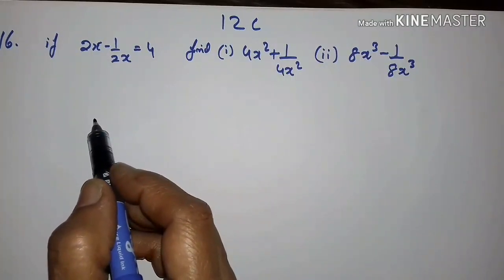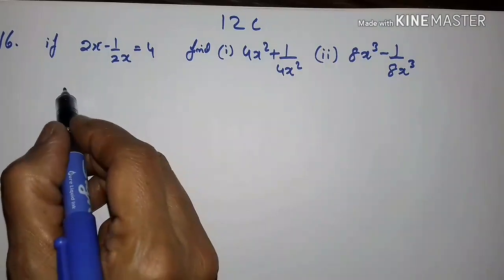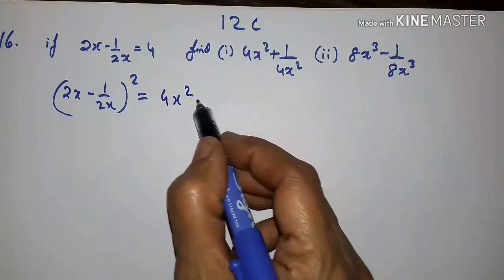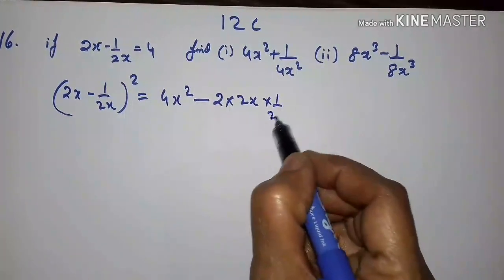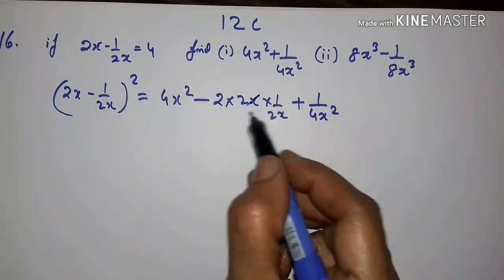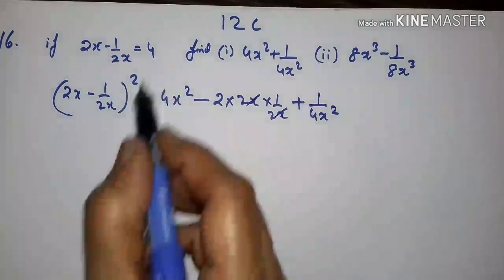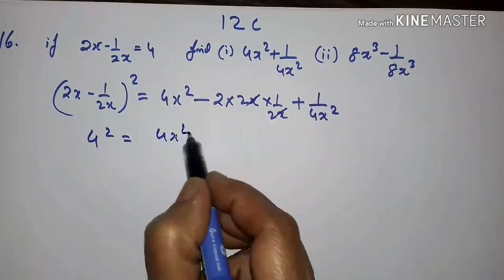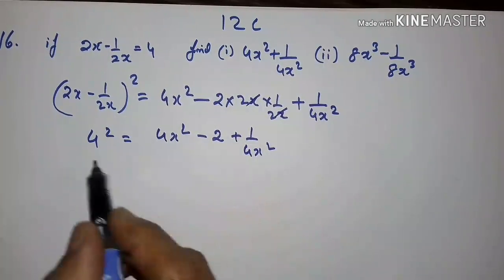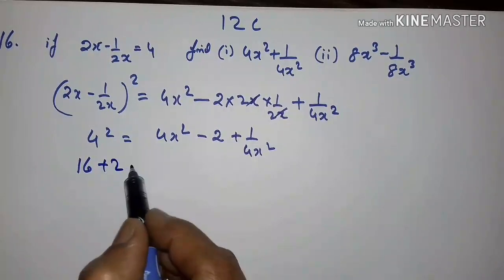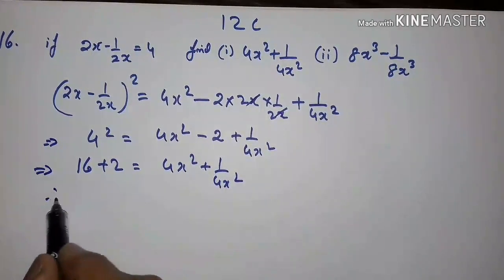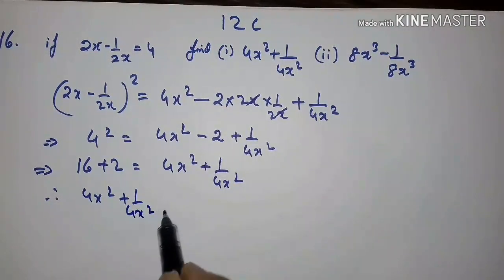For the first part, we use the formula a minus b, the whole square. Squaring 2x minus 1 upon 2x gives 4x squared minus 2 into 2x into 1 upon 2x plus 1 upon 4x squared, which simplifies to 4x squared minus 2 plus 1 upon 4x squared. Substituting 2x minus 1 upon 2x equals 4, we get 4 squared equals 16. So 16 plus 2 equals 4x squared plus 1 upon 4x squared, giving 18. Therefore, 4x squared plus 1 upon 4x squared is equal to 18.